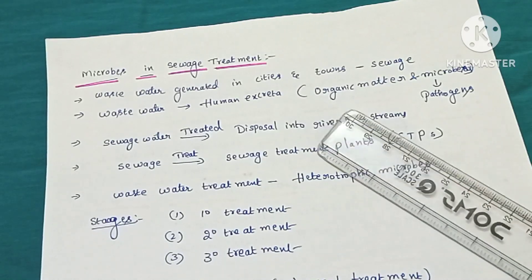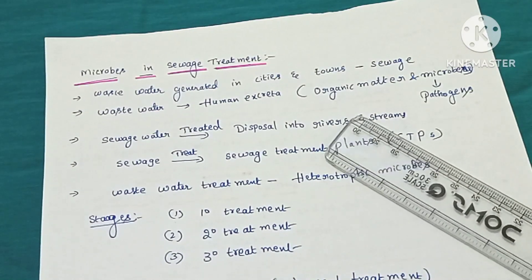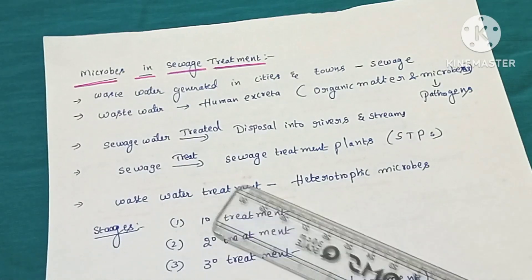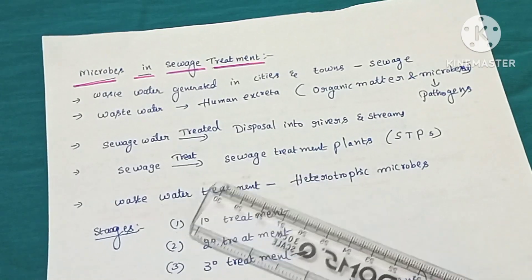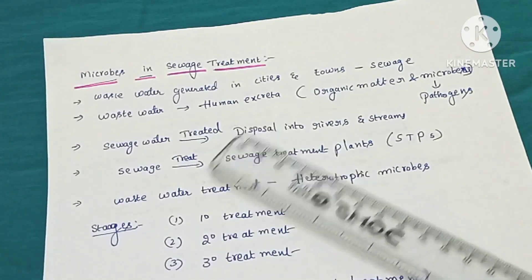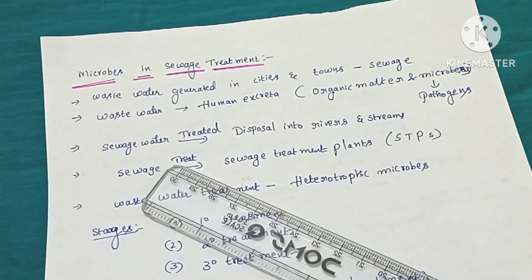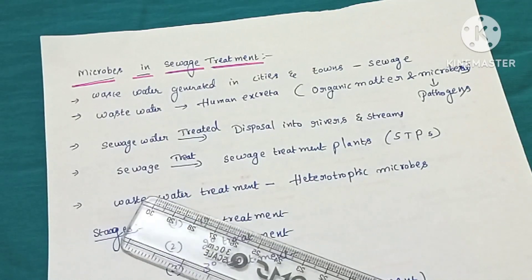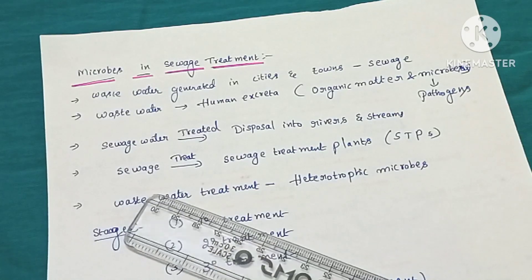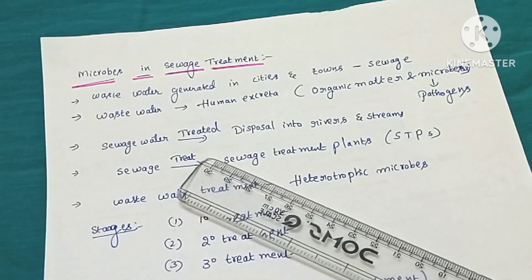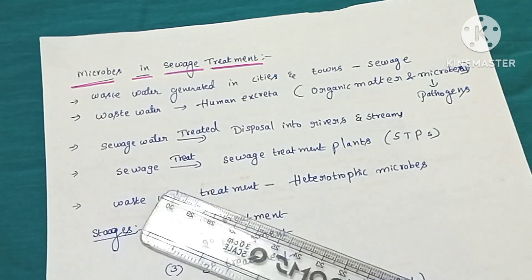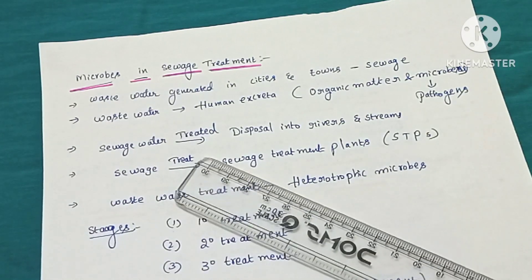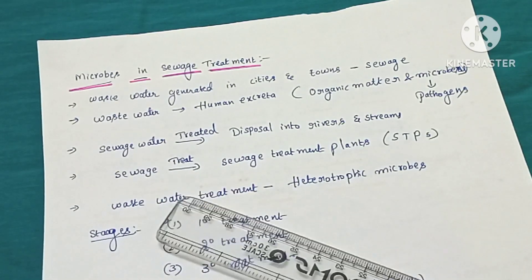These pathogenic organisms may include cholera-causing bacteria, typhoid-causing organisms, dysentery, amebiasis-causing, or polio-causing organisms. Different types of pathogenic organisms may be present in human excreta, which is present in sewage. If this sewage water is disposed into rivers, streams, or oceans without proper treatment, that may lead to water pollution.